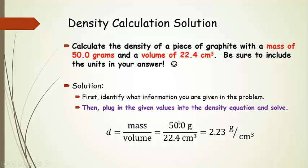Now just a little note just to remind you about fractions. You take the top number, divide it by the bottom number, and then you're going to get your 2.23 grams per centimeter cubed.